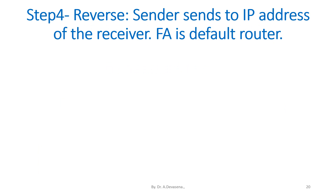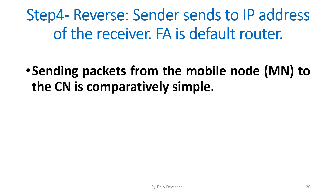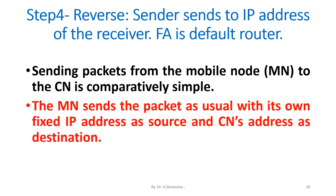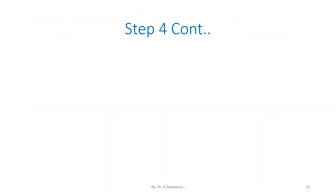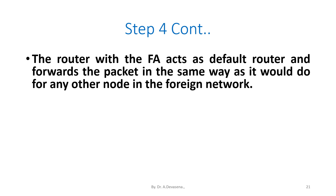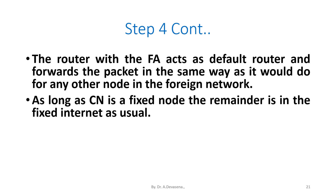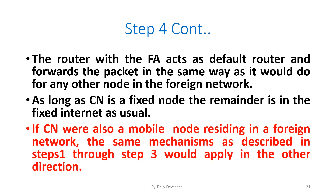Step 4 — Reverse: The sender sends to the IP address of the receiver; FA is the default router. Sending packets from the mobile node to CN is comparatively simple. The MN sends the packet as usual with its own fixed IP address as source and CN's address as destination. The router with the FA acts as default router and forwards the packet the same way as for any other node in the foreign network. If CN were also in a foreign network, the same mechanisms as steps 1 through 3 would apply in the other direction.